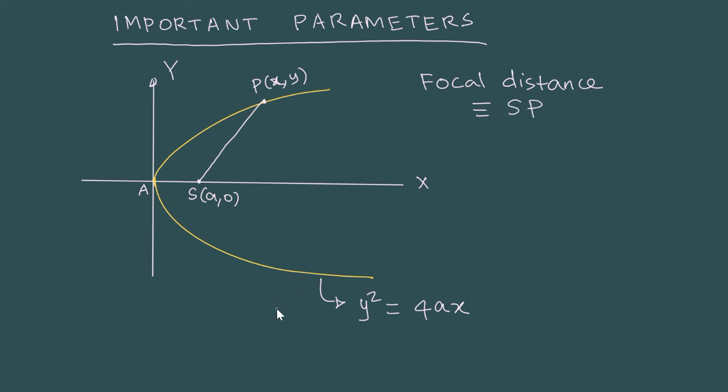If you draw a chord which is perpendicular to the axis, it is called a double ordinate. So you take a chord perpendicular to the axis - this is known as a double ordinate.